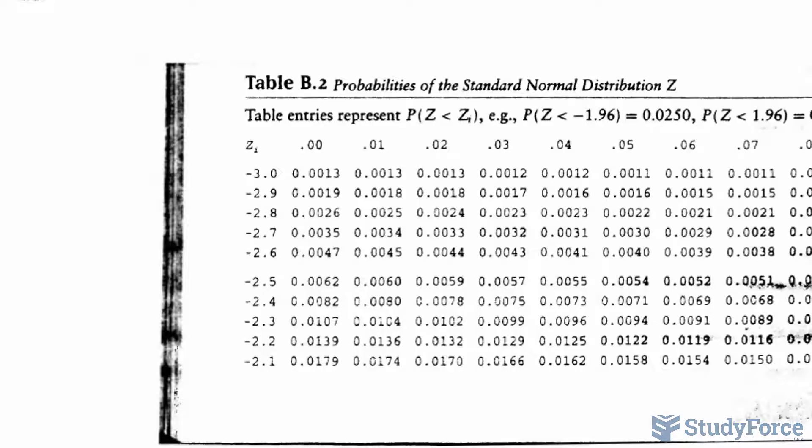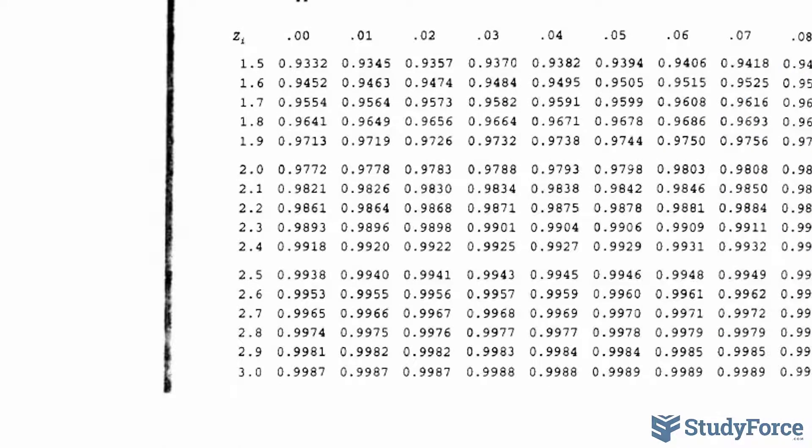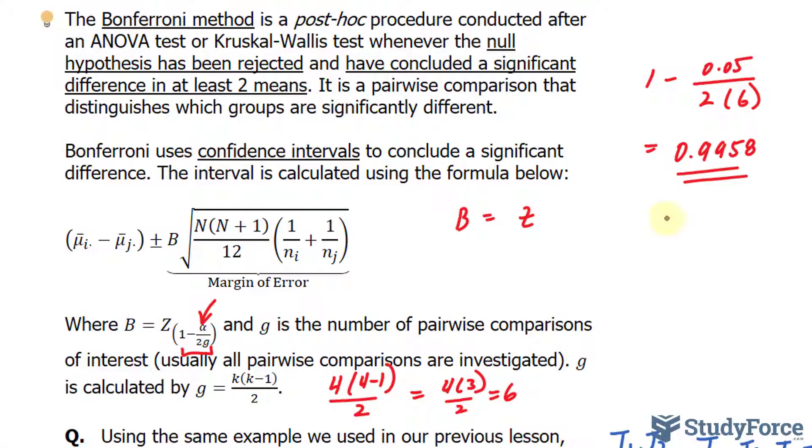So what Z-score will ensure a 99.58% probability? We'll need a table. My Z-score table looks like this, and I need to find 0.9958 in this collection of numbers. 0.9958 appears to be between these two values. So that is 2.63 in between these two, so I'll write down 2.635. 2.635 will ensure this probability, and that is my Z value, or my B value in this case.